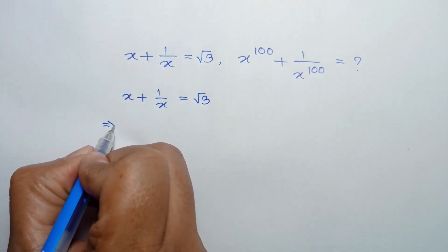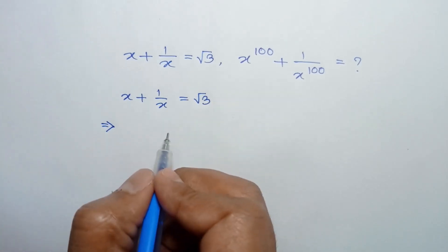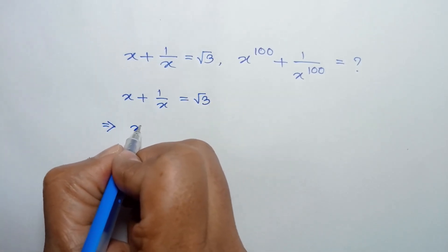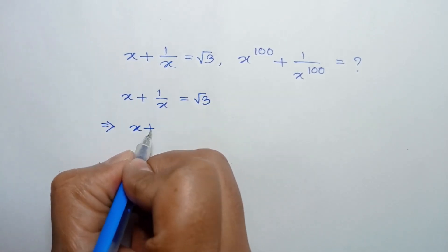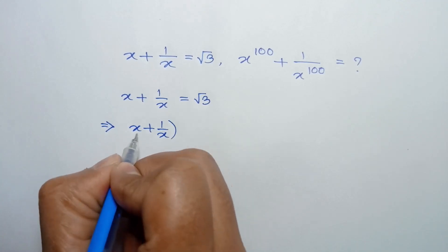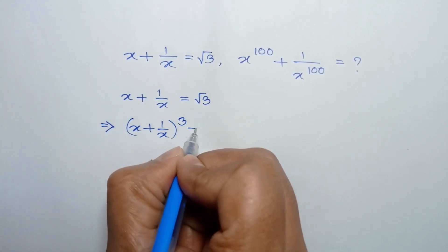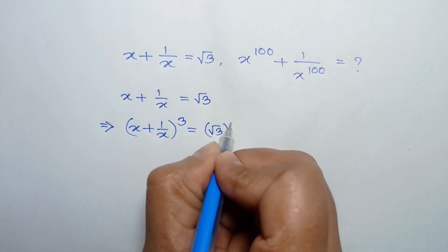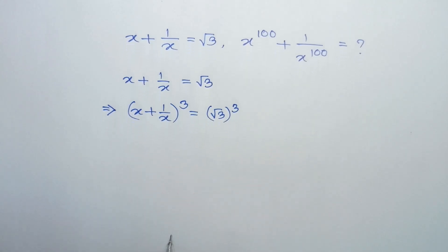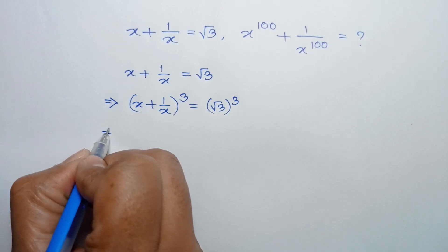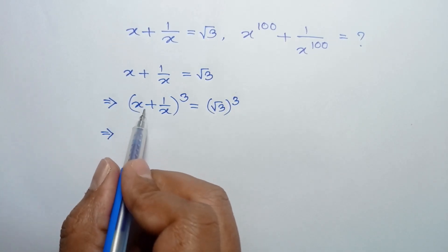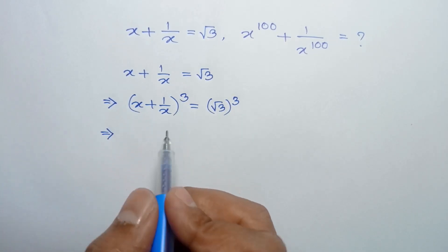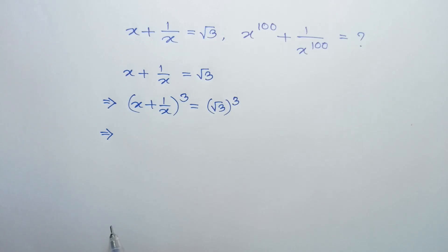Now, taking cube of both sides, we can write x plus 1 over x whole cube is equal to square root of 3 whole cube. Applying the formula a plus b whole cube is equal to a cube plus b cube plus 3ab times a plus b,